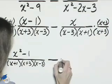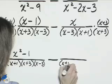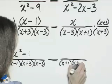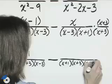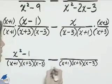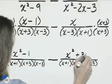We'll subtract from that this second fraction. Again, the denominator is x plus 1, x plus 3, x minus 3. The numerator is the product of x times x plus 3, which is x squared plus 3x.